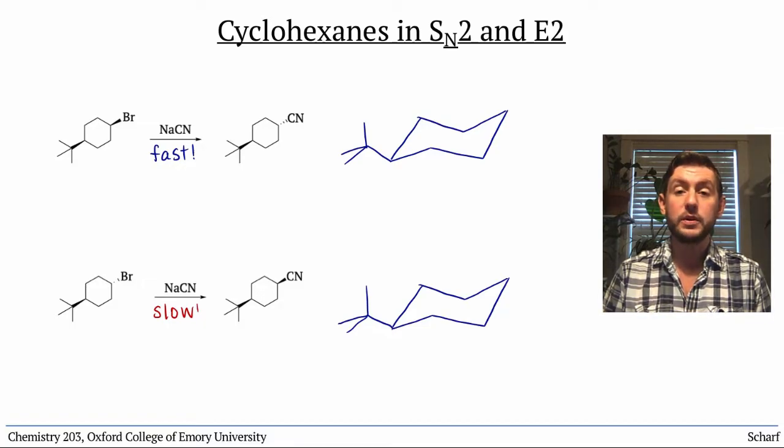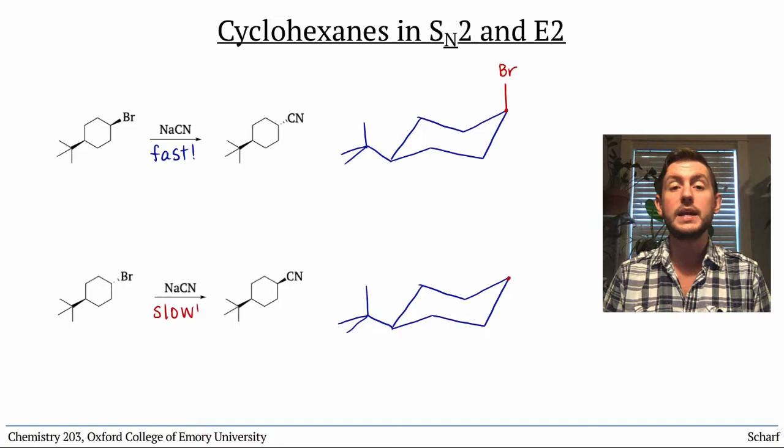For the first isomer, the bromine is also on a wedge, so up. It's at this carbon, so up means axial. The other isomer has the bromine on a dash, so down, here implying that it must be equatorial.